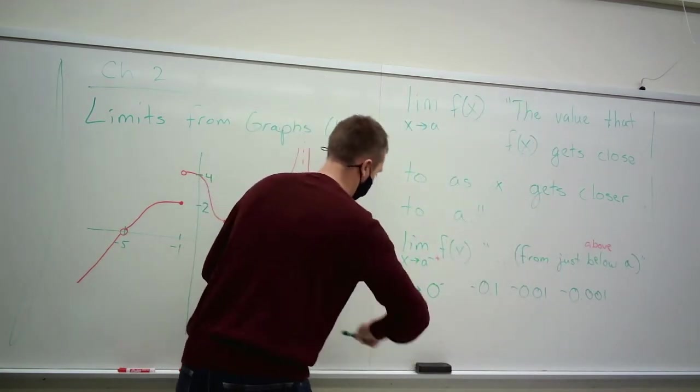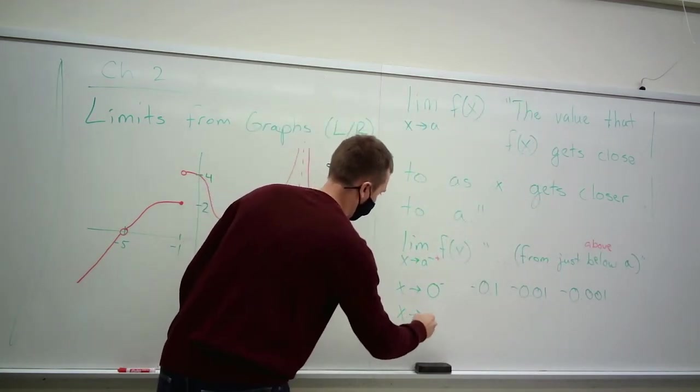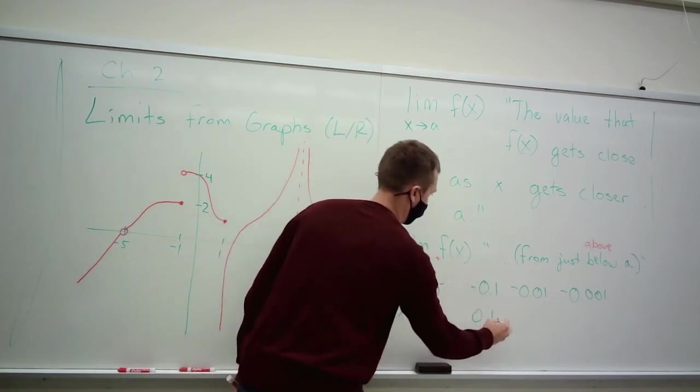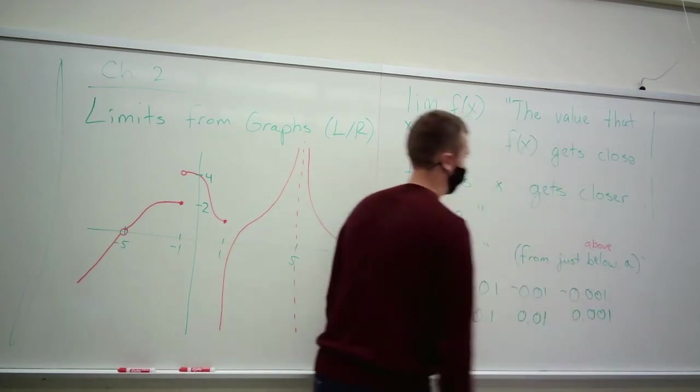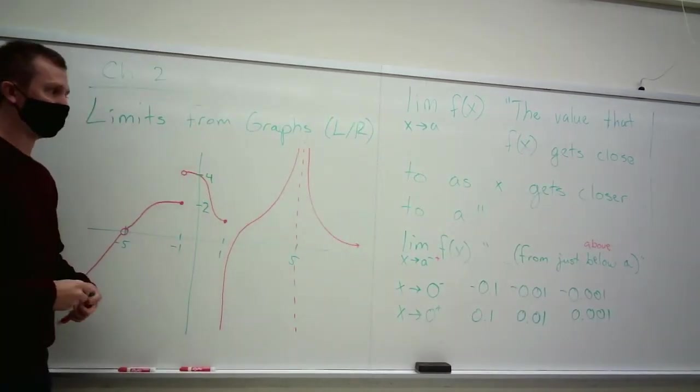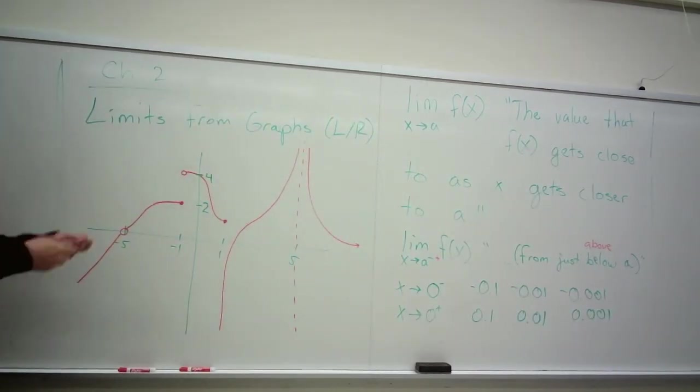So for example, 0.1, 0.01, 0.001. Here these are all numbers bigger than zero, and they're getting closer to zero.